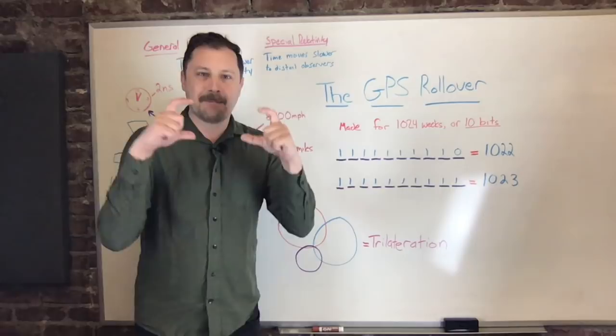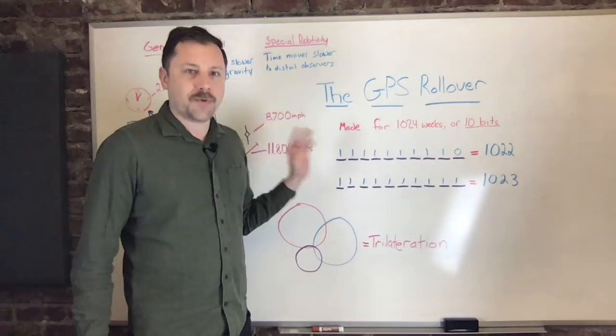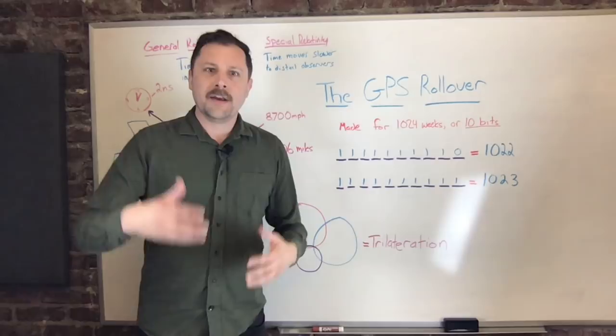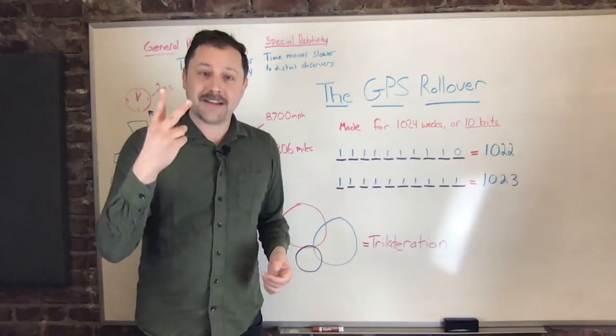So here I've written out 1,022. And so it's all ones. The way we count in binary is we go 0, 1, and then when we want to say 2, we have to say we don't have 2. We only have 10, right? So 3 is 11, and 4 is 100, and so on from there.